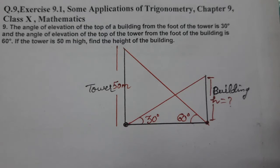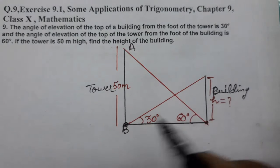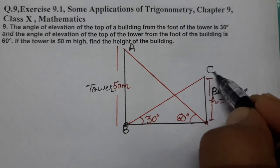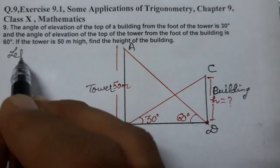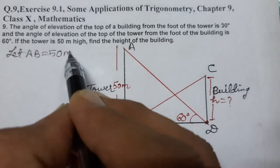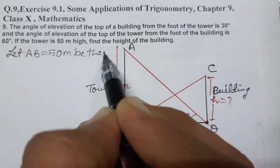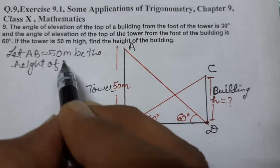So let's find out h. Let us give the names first. A ye, B ye - tower ho gaya. Aur isko dete hain C ye, D ye - building ho gaya.